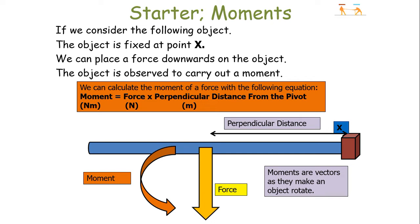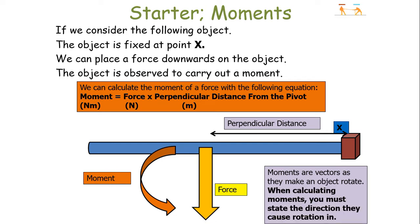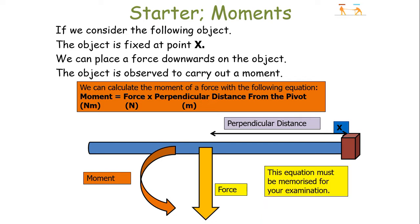Moments are vectors as they make an object rotate, so the moment acts in a particular direction. You can also notice that the moment is a vector because it contains one vector term in its equation — if a quantity contains one vector term, it itself will be a vector. When calculating moments, you should state the direction of rotation: either clockwise or anticlockwise. The equation — moment equals force times perpendicular distance from the pivot — has to be memorised for your examination.